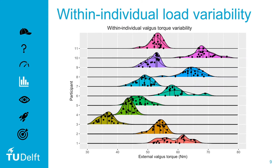Here you can see on the y-axis the density plots for each participant and on the x-axis the external valgus torque. This figure shows that the within individual valgus torque variability is present in pitchers and differed among pitchers. In addition, the load magnitude here, defined as the average, is also different between pitchers, which is consistent with literature. The results also showed that the within individual valgus torque was normally distributed in 9 out of 11 pitchers.